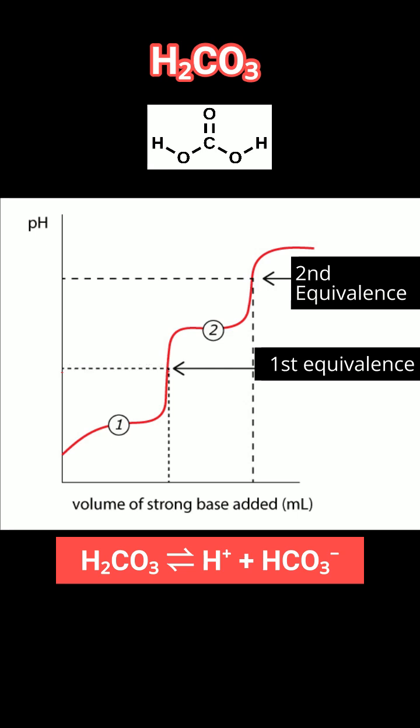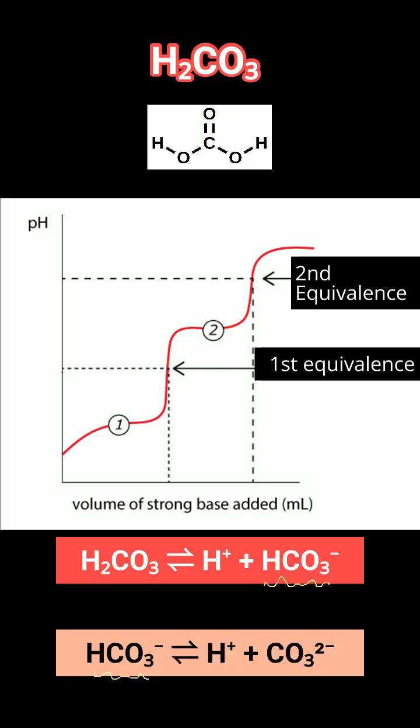Now, bicarbonate, also a weak acid, starts donating its proton, forming carbonate, CO3 2-. This forms your second buffer region.